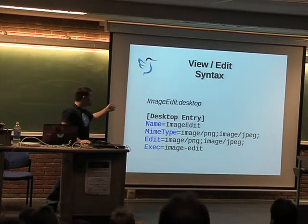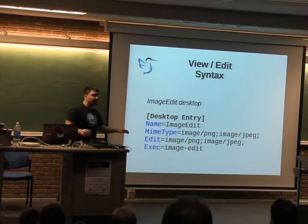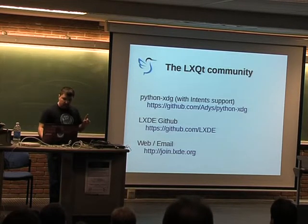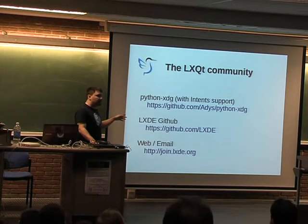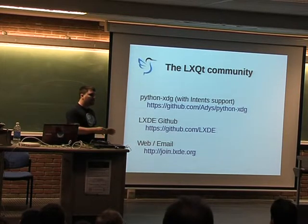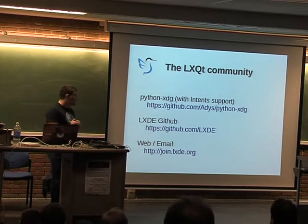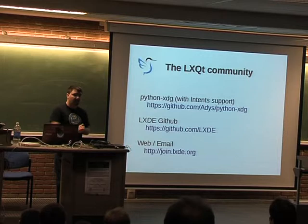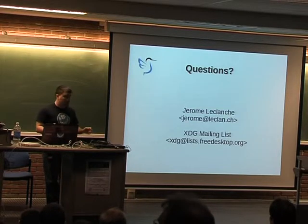It's available today on GitHub — I'll put a URL at the end of the talk. In the desktop file you still have the MIME type so it's backwards compatible; you just add an 'edit' or 'view' key. It's implemented in Python — there will be a C implementation as well. If you want to play with it: Python XDG is the repository URL. More generically, if you want to join the LXDE community, we welcome new developers. Just go to join.lxde.org — there's our mailing list and everything.